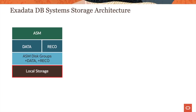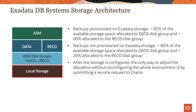The Exadata DB systems use local storage for ASM. When backups are provisioned on Exadata storage, 40% of the available storage space is allocated to the data disk group and 60% is allocated to the REDO disk group. After the storage is configured, the only way to adjust the allocation without reconfiguring the whole environment is by submitting a service request to Oracle.